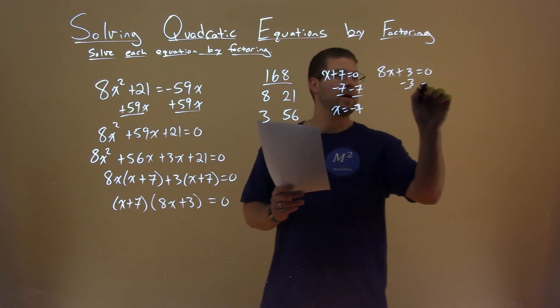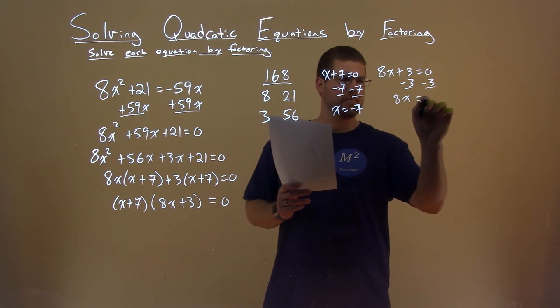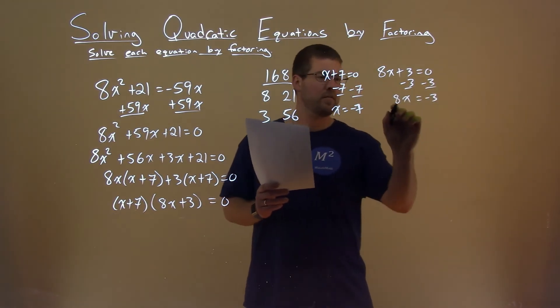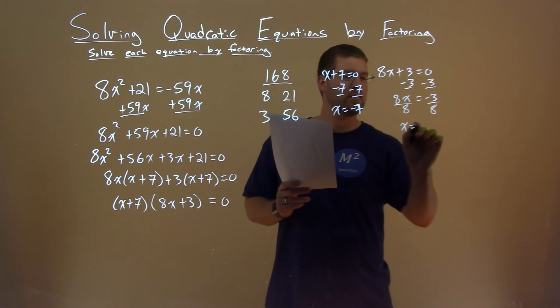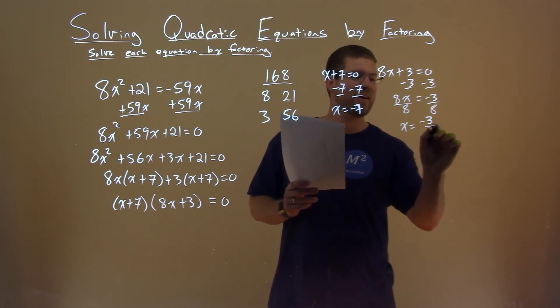Subtract 3 from both sides, we have 8x equals negative 3. Divide both sides by 8, and x equals negative 3 over 8.